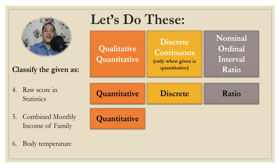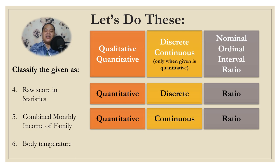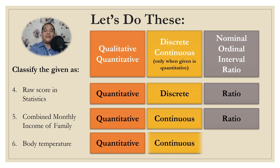Number 5: Combined monthly income of a family — quantitative because it is numerical, continuous because it may have decimals, and ratio because it has an absolute zero point. Number 6: Body temperature — quantitative because it is numerical, continuous because it has decimals, and interval because it has no absolute zero point. Did you get everything right?